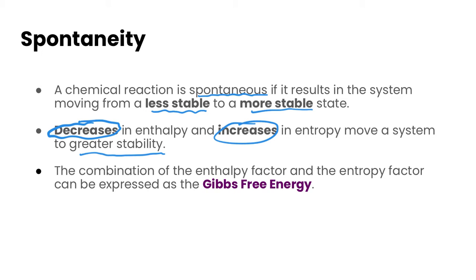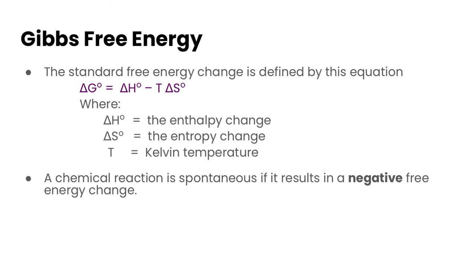We can do a mathematical calculation of this and the combination of taking both the enthalpy and the entropy together along with the temperature of the system is something called the Gibbs free energy. So let's see how that's defined here.